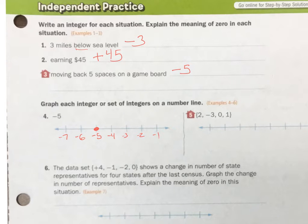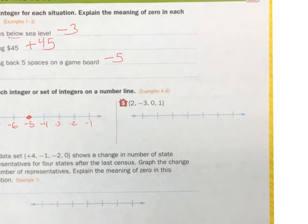Number 5. 2, negative 3, 0, 1. I have a 0 here, so I'm going to put a 0 right in the middle. And I'm going to put these 0, 1, 2, 3. Negative 1, negative 2, negative 3. So I start with 2. Positive 2 goes there. Negative 3 goes there. 0 is there. And 1 is there.